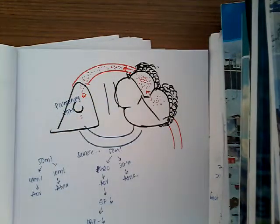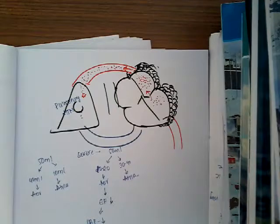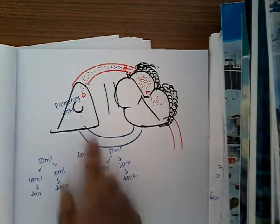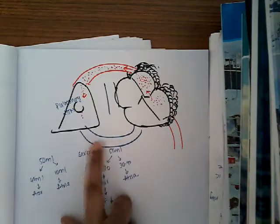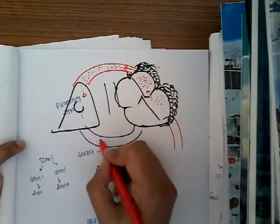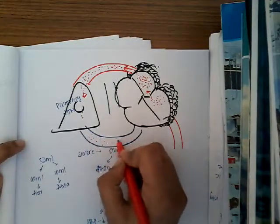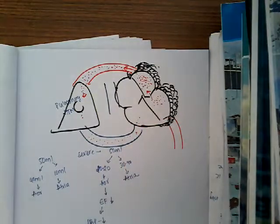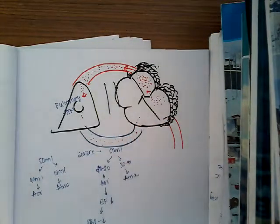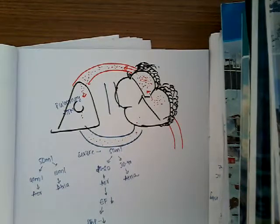Because of the pulmonary hypertension, the pressure can also transmit back into the pulmonary veins and then to the right ventricle, but this occurs only in very severe cases.